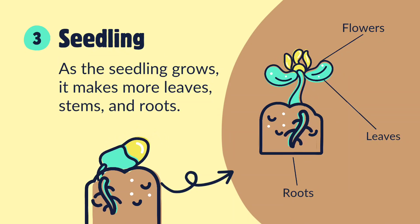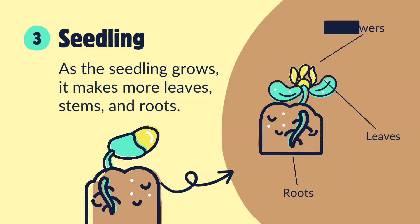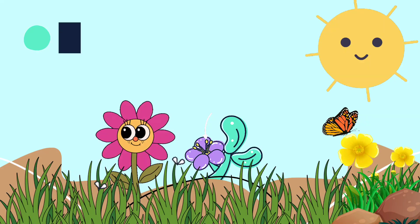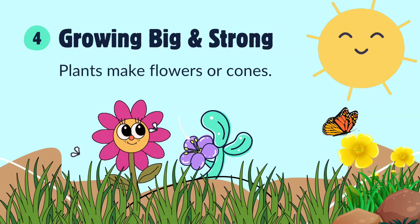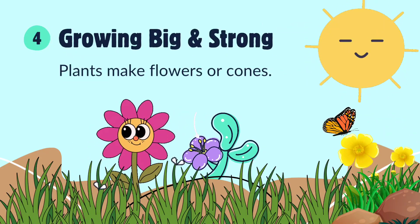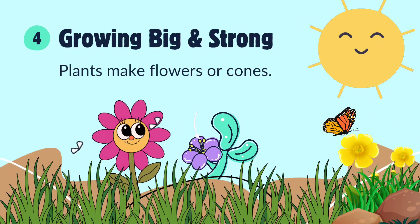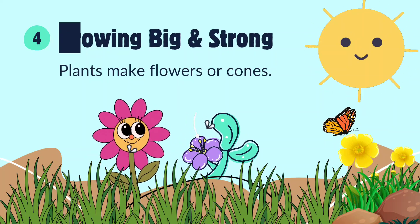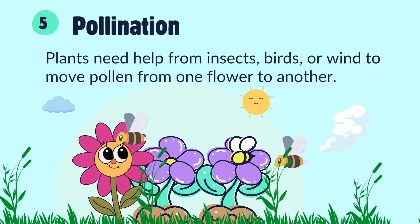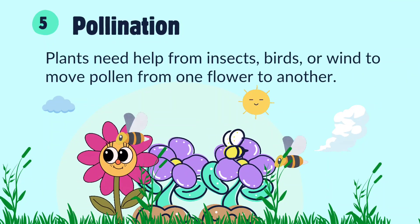As time passes, the seedling grows bigger. It gets small green leaves and becomes a little plant. It drinks water through its roots and makes food with sunlight through its leaves. The plant is now growing healthy and strong.